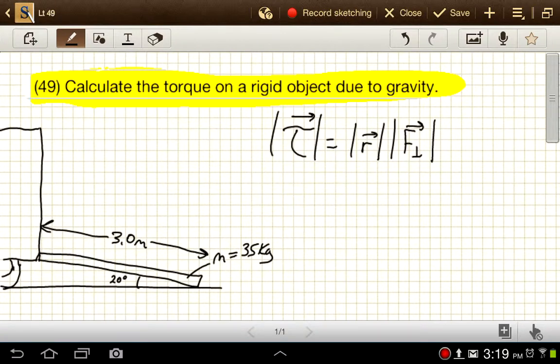But for something like gravity, this seems like an impossible problem to solve, or a very difficult one anyway, because this force that's acting on it, gravity, acts on the entire object. So what would our distance be? What would our position of that force be?